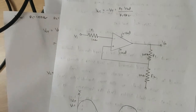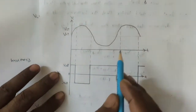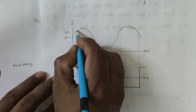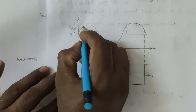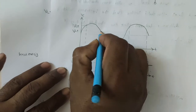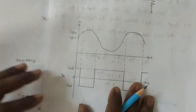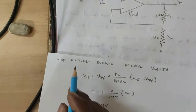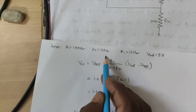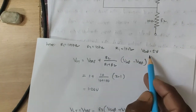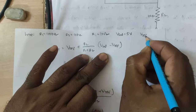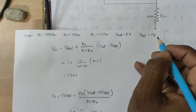This is the input signal and this is the output signal. This voltage is the Upper Threshold Voltage and this voltage is the Lower Threshold Voltage. In the practical, R1 is 100 kΩ, R2 is 10 kΩ, Ri is 1 kΩ, Vsat is 5 volts, and V_reference equals 1 volt.